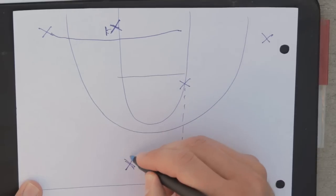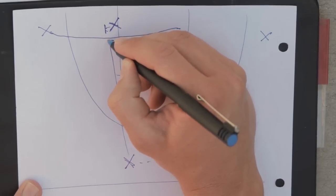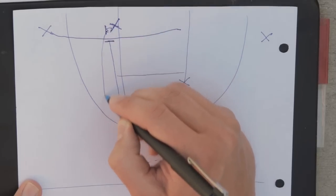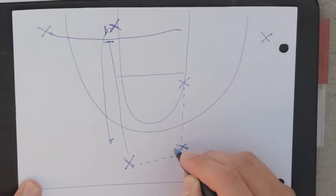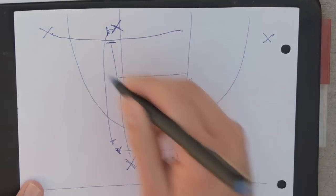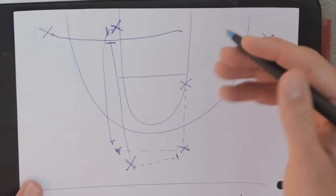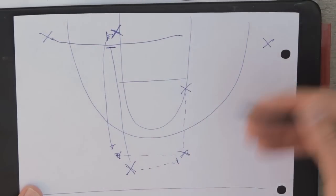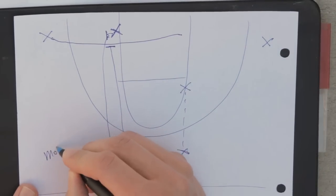After the point guard makes the pass, he comes down to set a screen on the screener. This screen man comes up and gets the catch back from this guard here with the ball. You can go in motion continuously going on that same motion from each side to side as a continuous motion offense.